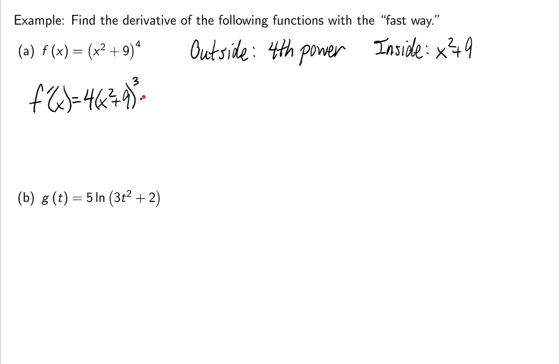Then I'm going to do times the derivative of the inside, which often I will just write like this. So you have the derivative of the outside times the derivative of the inside, which I haven't taken yet. Let me finish it. 4 times x squared plus 9 cubed times 2x. I could simplify that a little bit. Let's write this as 8x times x squared plus 9 cubed.